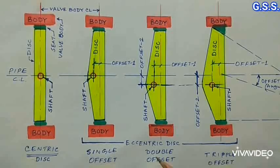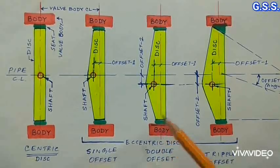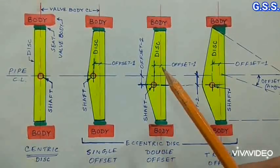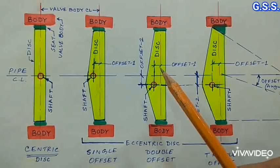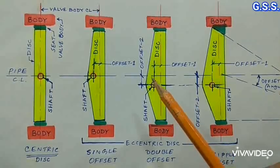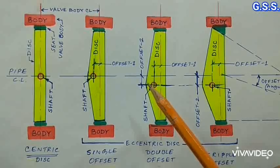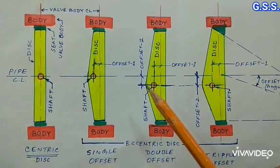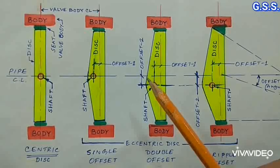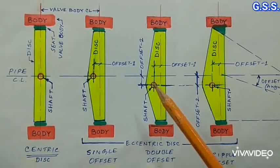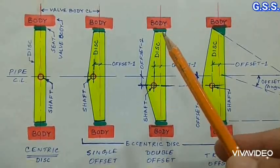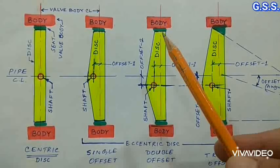In double offset eccentric butterfly valve, first offset is the same as like single offset type. But additionally, second offset is the offset between shaft axis and pipe axis. Due to these two offsets, disc does not touch the seat when opens fully.